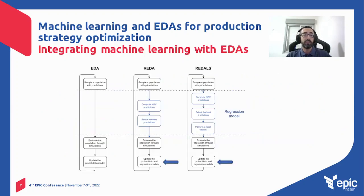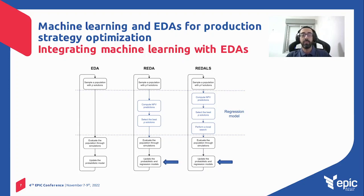Here on the left we have the base version of our algorithm, named EDA. We can see the three main steps: we start by sampling p candidates, where p is the population size and a parameter of our method. After that we have the evaluation step in which we run simulations to evaluate the population — this step is usually the longest one. At the end of each iteration we update the probabilistic model to guide the search, and the steps are repeated until the budget of simulations is exhausted.